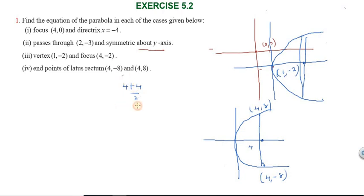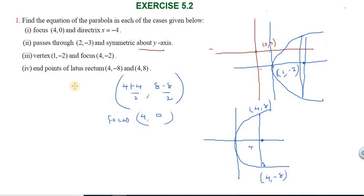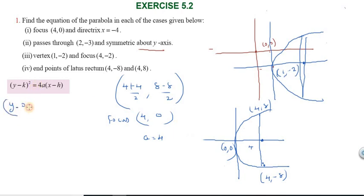The midpoint of (4, 8) and (4, −8) is (4, 0), confirming the focus is at (4, 0). The parabola opens right. With vertex at (0, 0) and a = 4, the equation is y² = 4 × 4 × x = 16x. So y² = 16x is the answer.